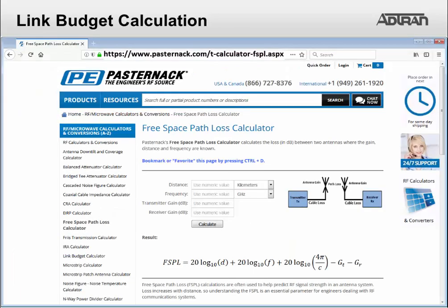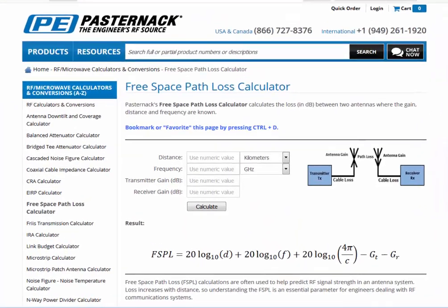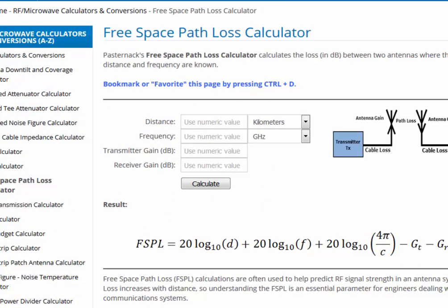Here we have one of many online free space path loss calculators. The antennas are 600 feet apart so let's enter that first. I'm using channel 36 so I'll enter 5.180 for the frequency.